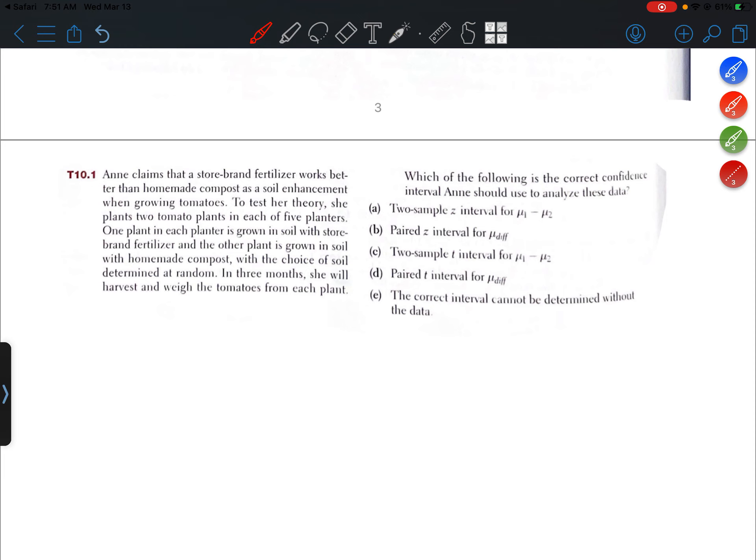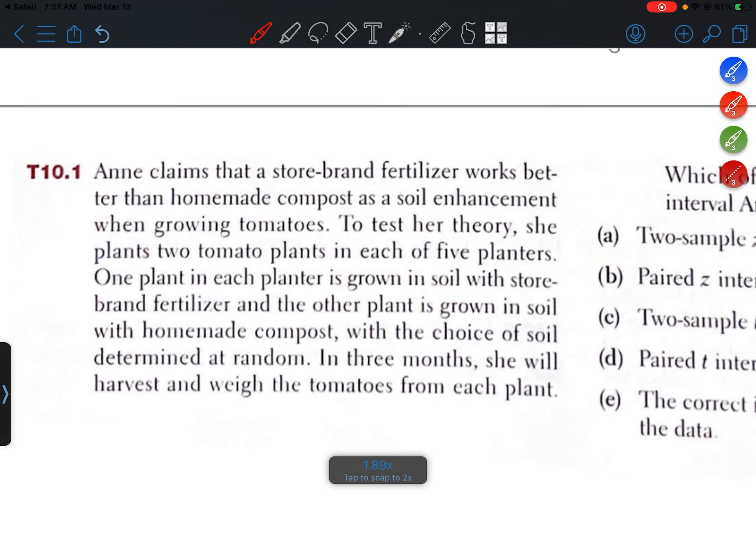Which of the following is the correct confidence interval Anne should use to analyze the data? Alright, so the first thing I want to point out is that when Anne is planting these tomatoes, she's planting two plants in each planter.